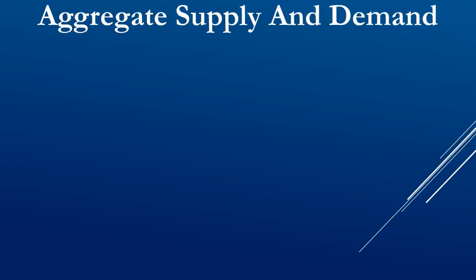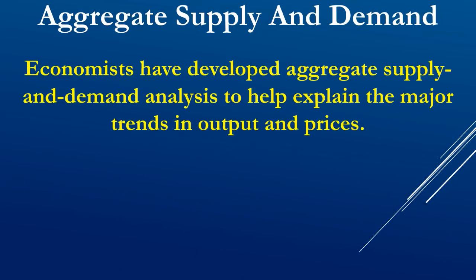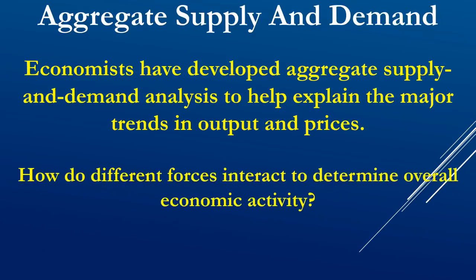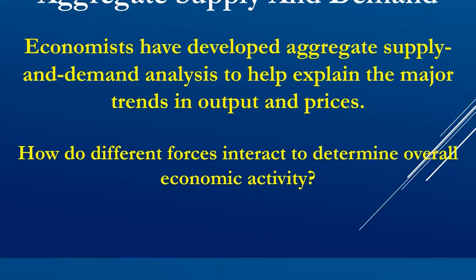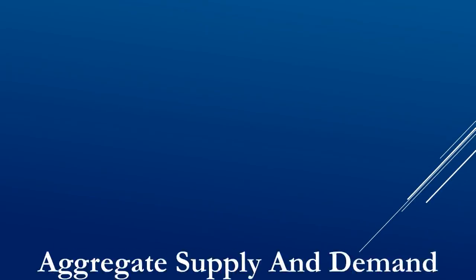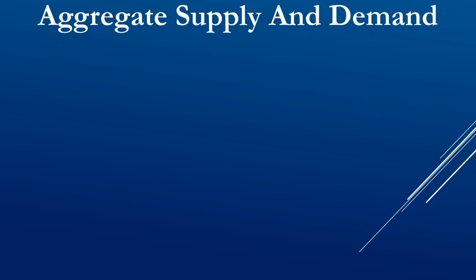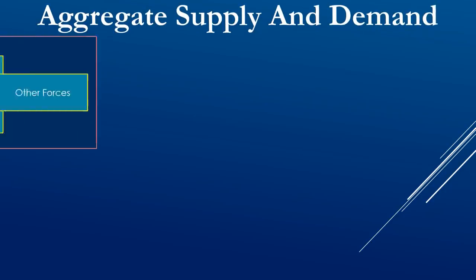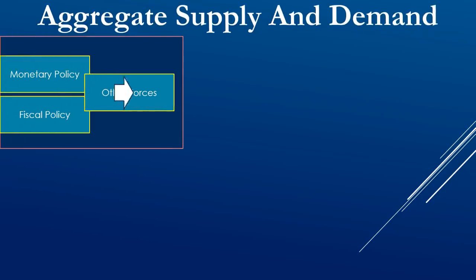The demand and supply are two important variables that affect the whole economy. Economists have developed aggregate supply and demand analysis to help explain the major trends in output and prices, and how these two forces interact to determine overall economic activity. I can show you the interaction of demand and supply with the help of this chart. Aggregate demand is affected by monetary policy, fiscal policy and other factors.